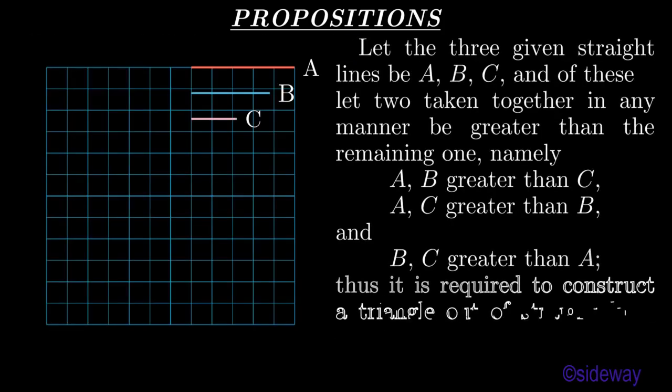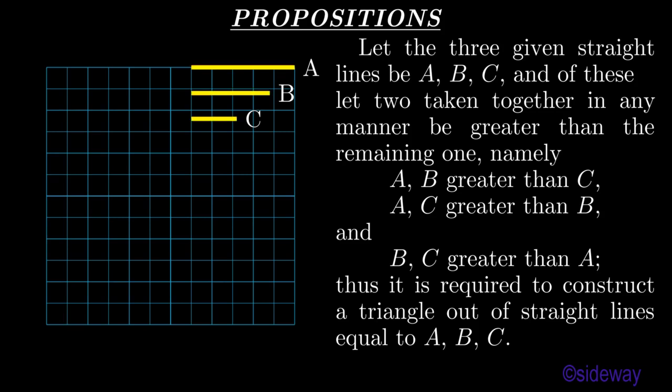Let the three given straight lines be A, B, C, and of these let two taken together in any manner be greater than the remaining one, namely A, B greater than C; A, C greater than B; and B, C greater than A. Thus it is required to construct a triangle out of straight lines equal to A, B, C.